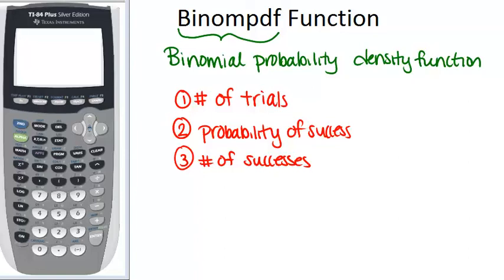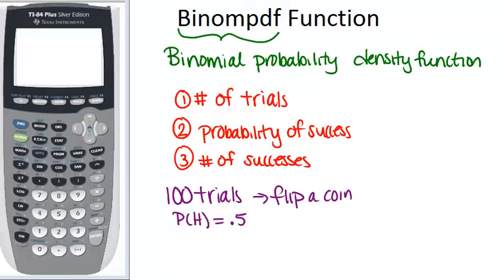So let's see how this actually works. We're going to test it out with the situation I just described: 100 trials of flipping a coin. The probability of success or probability of getting heads, which we'll think of as success, is 50%. It's a normal coin. And we're wondering what's the probability of having exactly 40 heads.